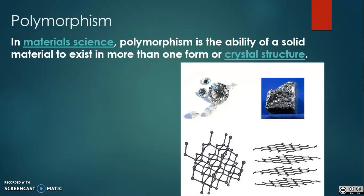The complete morphology of material is described by polymorphism and other variables such as crystal habit, amorphous fraction, or crystallography defects. Polymorphism is relevant to the fields of pharmaceuticals, agrochemicals, pigments, dyestuffs, foods, and explosives.